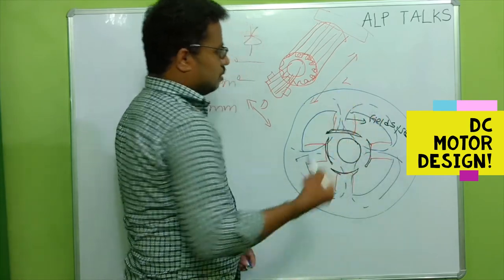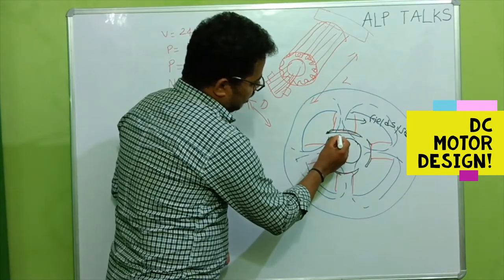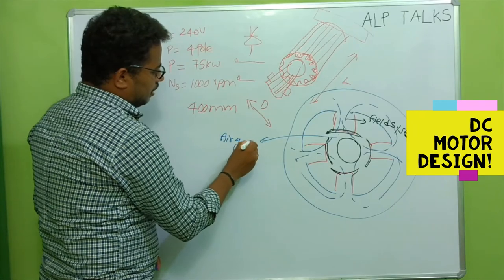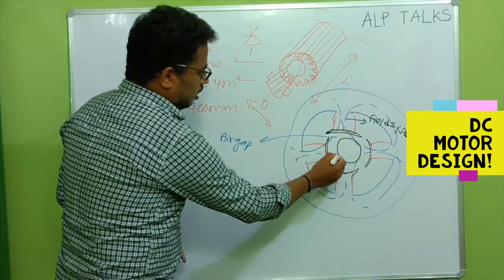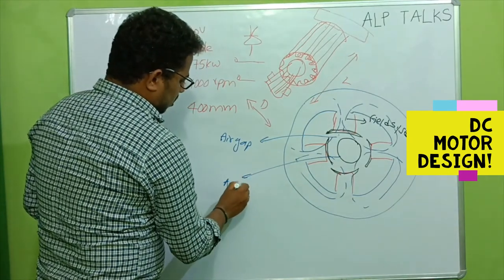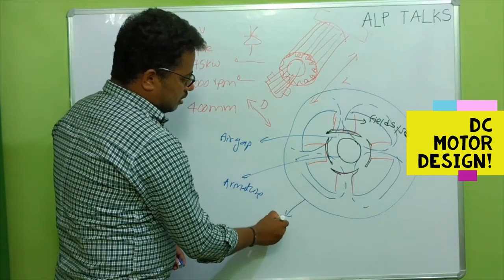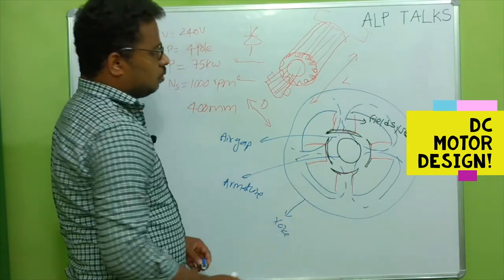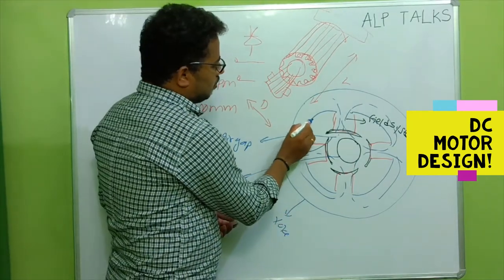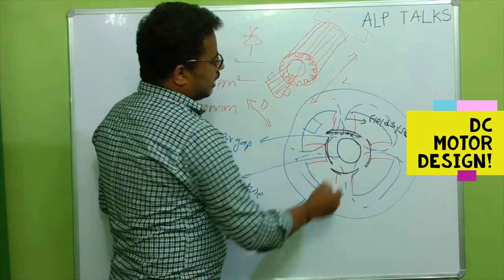Here whatever space is there, we are providing some empty space between - this is the armature and this is the air gap, and this is the yoke arrangement. Sometimes for higher ratings we may have some interpoles here and some compensating windings to take care of armature reaction and for better commutation.